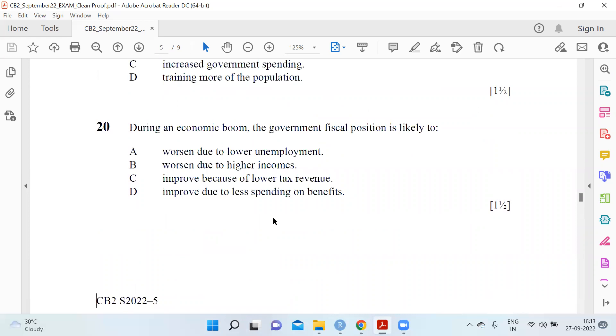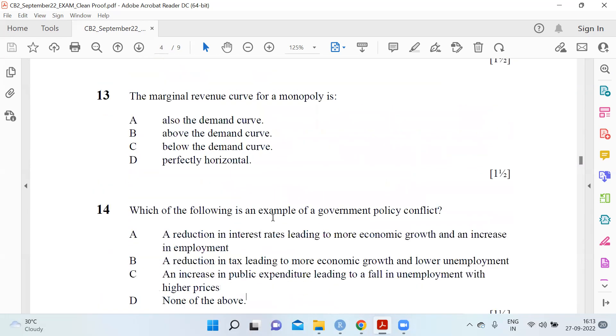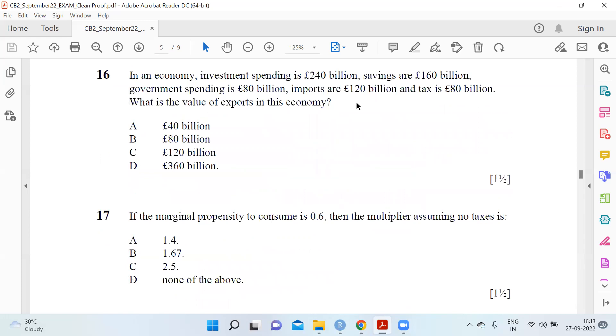In an economy, investment spending is 240 billion, savings 160, government spending 80, imports are 120, and taxes 80 billion. What is the value of exports in the economy? 16 A, 40 billion. If the marginal propensity to consume is 0.6, the multiplier assuming no tax is 2.5.